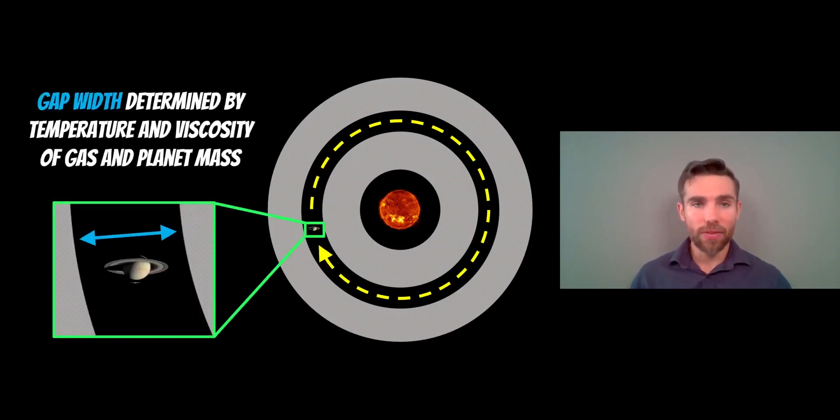The gap width is determined by the temperature and viscosity of the gas in this disk but also the planet mass. A bigger planet creates a wider gap, smaller planet, smaller gap. This is quite important because a lot of the time we can't directly see a planet in a disk but we can see a gap and we can measure the gap width. If we can measure that gap width we can infer the size of a planet that would be there. We could indirectly detect a planet by looking at the distortion it causes on the disk.